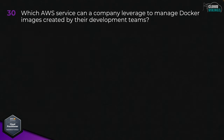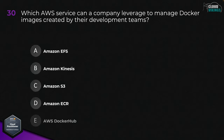Question thirty: which AWS service can a company leverage to manage Docker images created by their development teams? Options are: A, Amazon EFS; B, Amazon Kinesis; C, Amazon S3; D, Amazon ECR; or E, AWS Docker Hub. The correct answer is D, Amazon ECR.